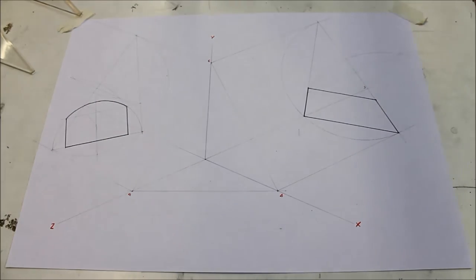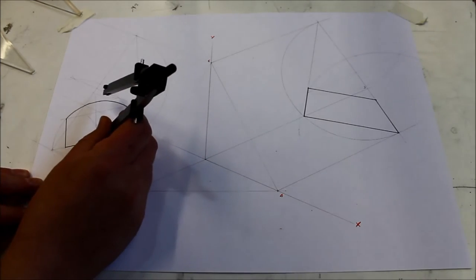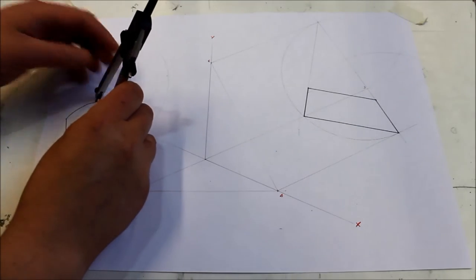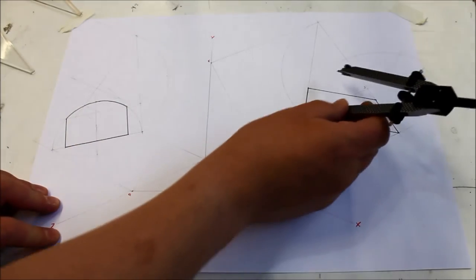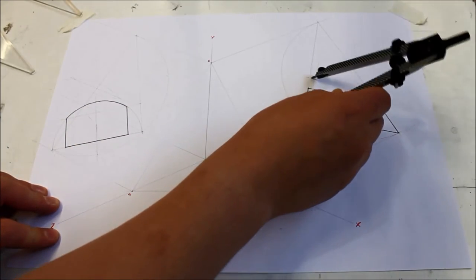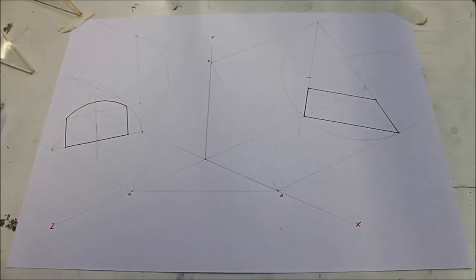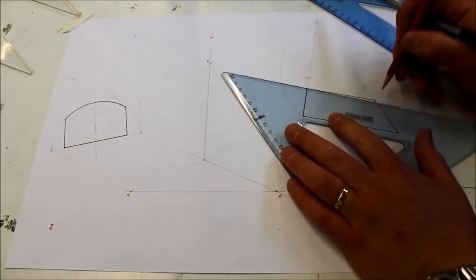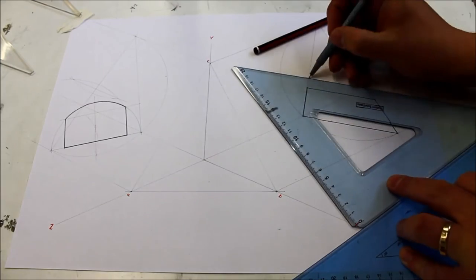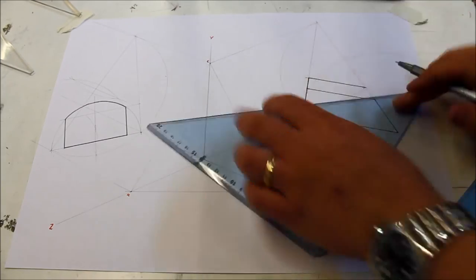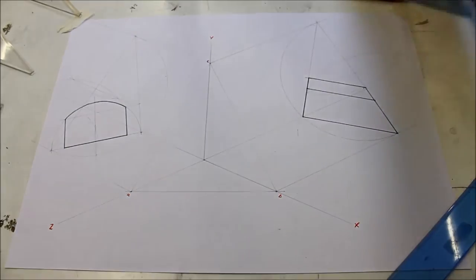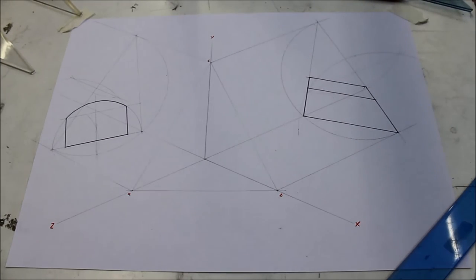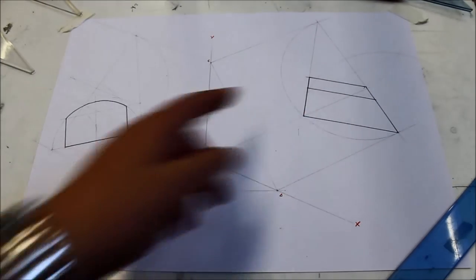Now that's your elevation done and I marked in this line here because that height is the full height. The radius is the full height which you can step off here and finish off our end view. So that is our elevation and our end view done.